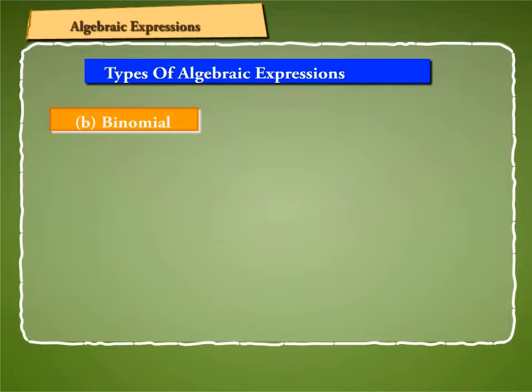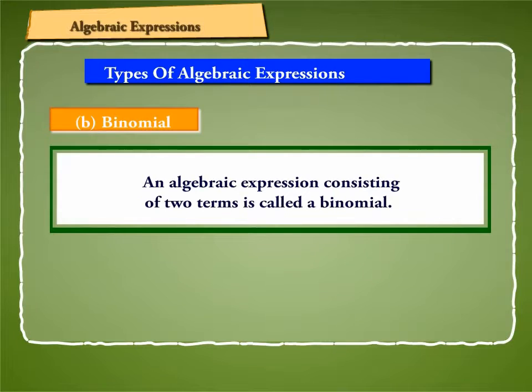B. Binomial: An algebraic expression consisting of two terms is called a binomial. For example, 2x plus 3 and 2x squared plus y are binomials.